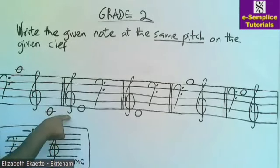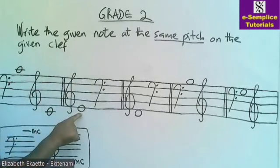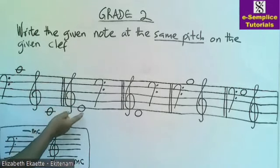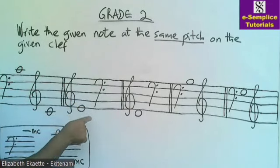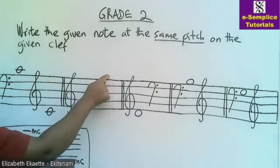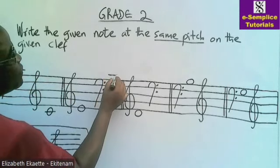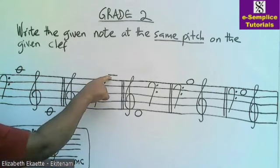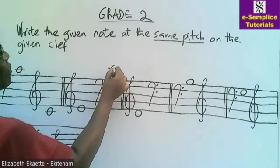The next question: you are given a note on the treble clef and asked to write it at the same pitch on the bass clef. Read the note — this is E above middle C. Middle C for the treble clef is here, so this note is E above middle C. When you come to the bass clef, look for E above middle C. Middle C on this clef is here, so you need to find the E that is above this middle C. The space above C is D, so the next ledger line is going to be E above middle C.